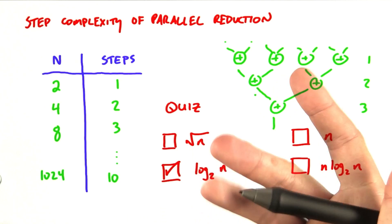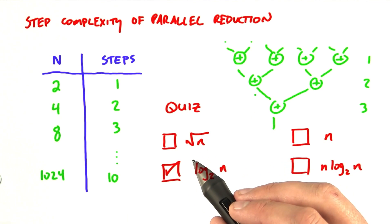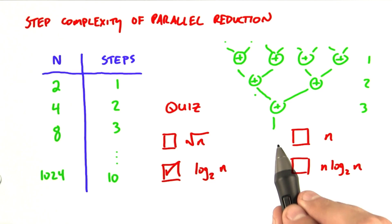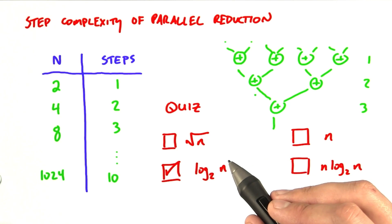If we're adding 1,024 elements in parallel, our first step requires performing 512 additions at the same time. Now, a modern GPU can actually handle this,